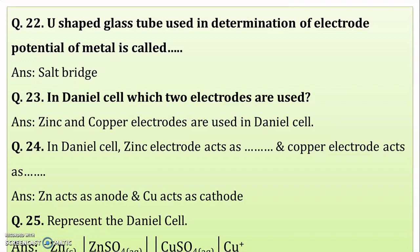The Daniel cell is represented as: Zn(s) | ZnSO₄(aq) ‖ CuSO₄(aq) | Cu(s). A single vertical line means the zinc electrode is immersed in zinc sulfate aqueous solution. The double vertical line represents the salt bridge. The copper electrode carries a positive charge and the zinc electrode carries a negative charge.